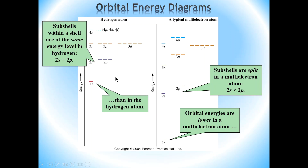The second shell will have 1s and 2p orbitals, and the third shell will have 3s, 3p, and 3d. That pattern continues onwards in the higher shells. You'll notice that where shells have different subshells, those subshells have the same energy. So the energy of the 2s subshell will be the same as that of 2p, and 3s, 3p, and 3d all have the same energy. That is the case for the hydrogen atom.